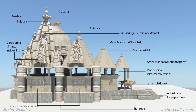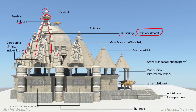Now we will revise all these terms using an image. This is the elevation of the Kandariya Mahadeva temple, dedicated to Shiva. On top you can see the Kalasha, below it is the Amalaka, and from there downward is the Shikhara. The smaller Shikharas visible around it are called Urushringa — that is, subsidiary Shikharas. The central Shikhara is situated over where the Garbhagriha is located.